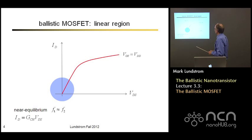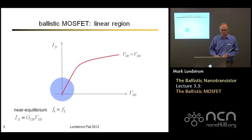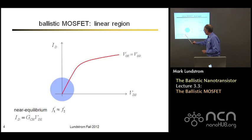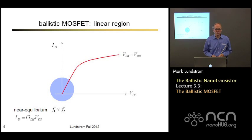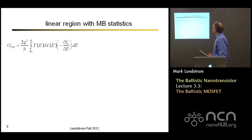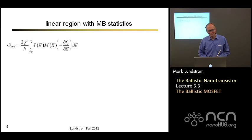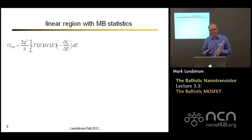Let's go back to the IV characteristics and compute them first in the low applied voltage regime, then in the high applied voltage regime. When we apply a small voltage between drain and source, the Fermi functions of the two contacts are very close. We're in the small bias regime where drain current is proportional to drain-to-source voltage, and the constant is the channel conductance. Let's compute it using Maxwell-Boltzmann statistics, which makes things easy and allows us to relate results to conventional MOS expressions.